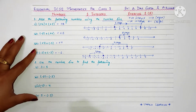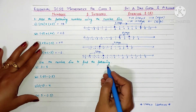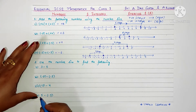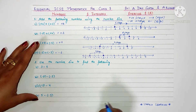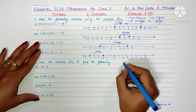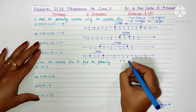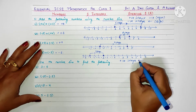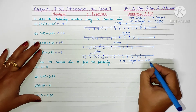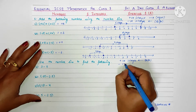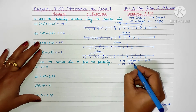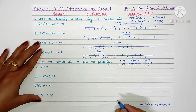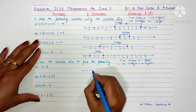Next, question number two: use the number line to find the following. Here we have subtraction in every question. In subtraction the concept is vice versa — if you subtract a positive integer, we move towards the left; if you subtract a negative integer, we move towards the right.